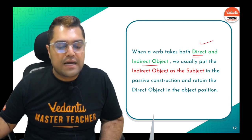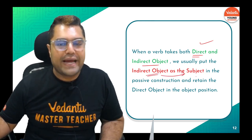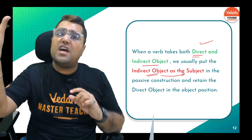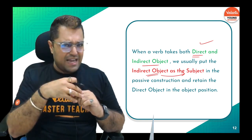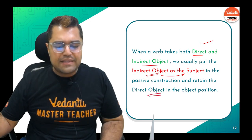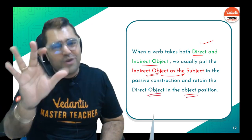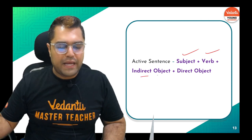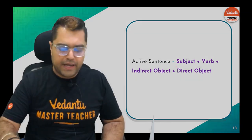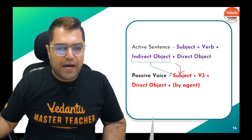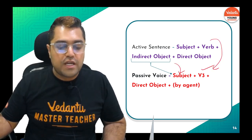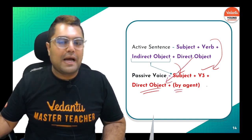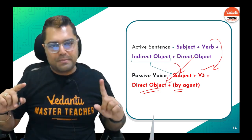When there are two objects — direct and indirect — the indirect object will always become the subject in passive voice. You had to pick one object to make the subject; now you have two objects. The rule is: take the indirect object as the new subject, place V3 after it, keep the direct object in its position, then add 'by' + the original subject. Active structure: Subject + Verb + Indirect Object + Direct Object.